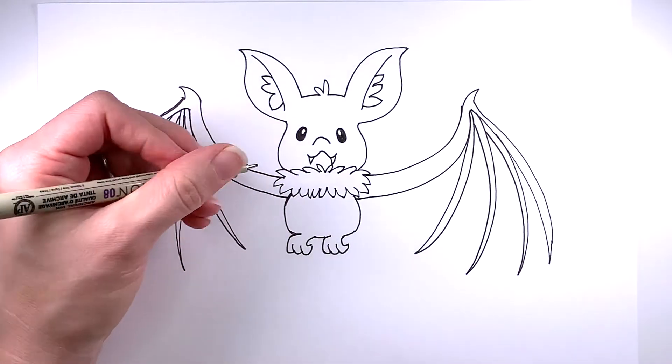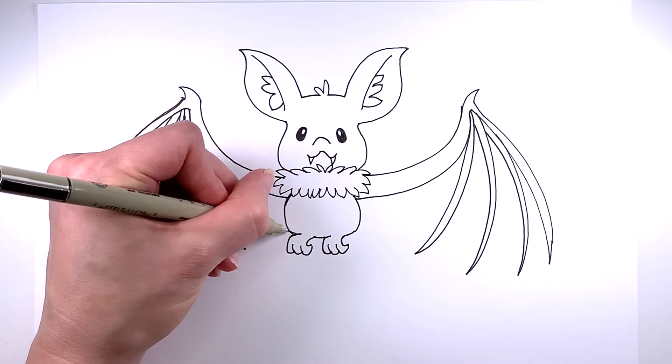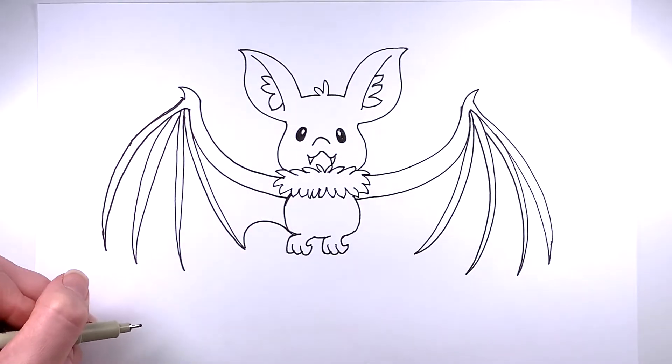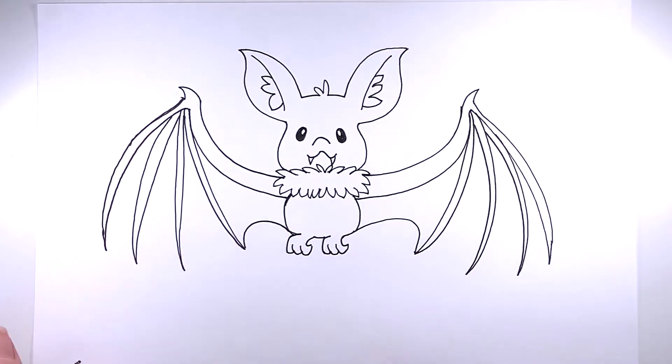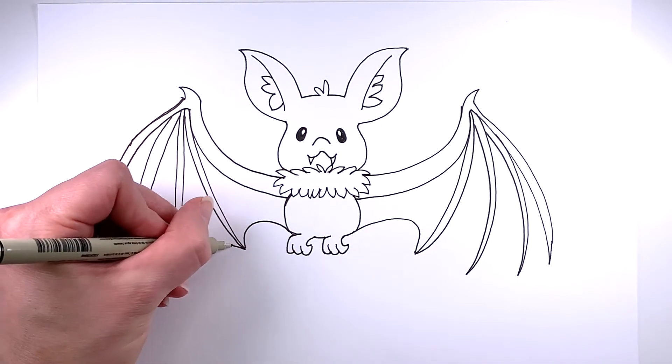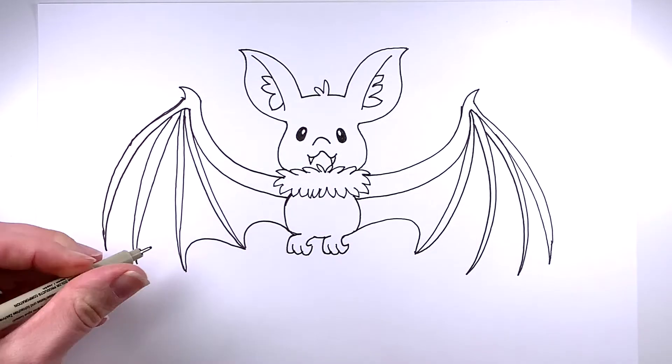And now we'll go ahead and make the wing membrane. Just by making some really nice round curves there, from one point to the other of the wing, the wing bones.